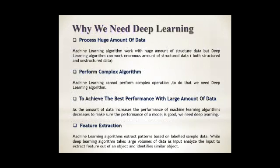First, process huge amount of data. Machine Learning algorithms work with huge amounts of data, only structured form of data. But Deep Learning works with both structured data and unstructured data.